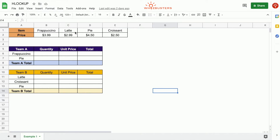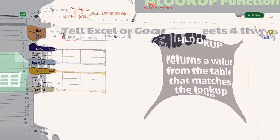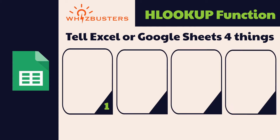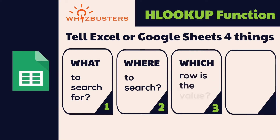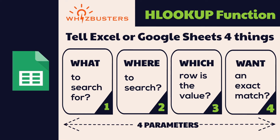What does the function return? The function returns a value from the table that matches the value you looked up. We need to tell Google Sheets or Excel four things: one, what do we want to look up or search for; two, where do we want to look for this; three, in which row is the value; and four, do we want an exact match for the lookup. These are the four parameters in the HLookup function.